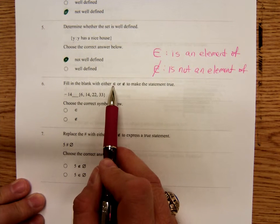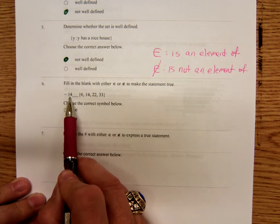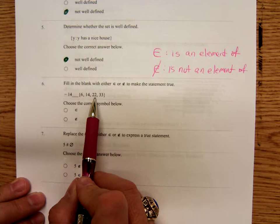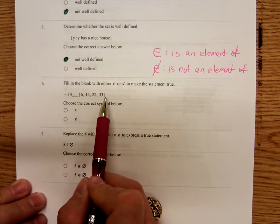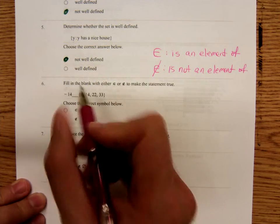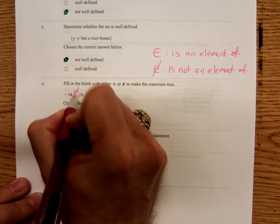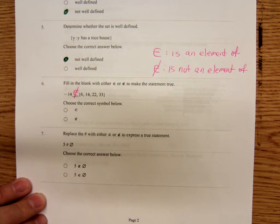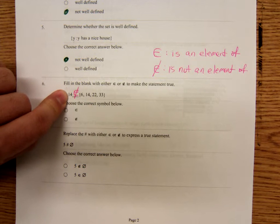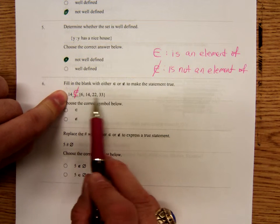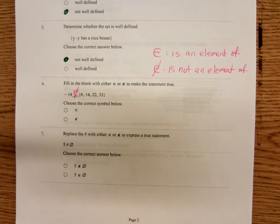So, number six. We're going to put one of these symbols in here. Look at the set. 6, 14, 22, 23. Is negative 14 in this set? Well, no. So, we'll say negative 14 is not an element. Now, if this had been a positive 14, then yes, positive 14 is in this set. So, positive 14 is an element. Negative 14 is not.